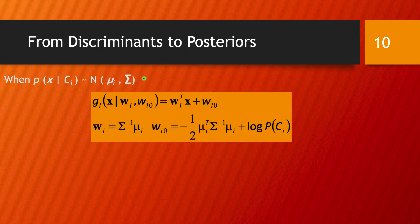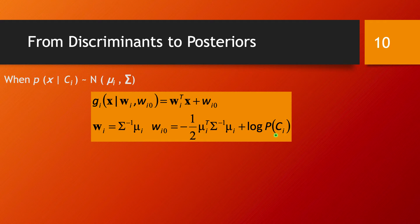Sigma is a d-by-d covariance matrix shared across all classes. In this case, we can have a linear discriminator for each class C_i of the form where w_i is exactly sigma inverse times the mean vector mu_i, and w_{i0} is given accordingly. For more details, refer to unit five of the first part of this course. These classes can be separated linearly with this kind of linear discriminator.